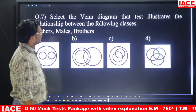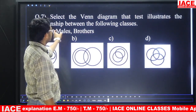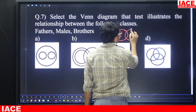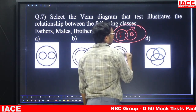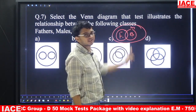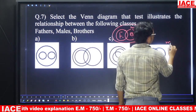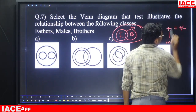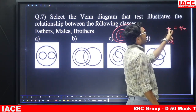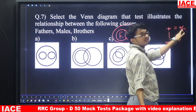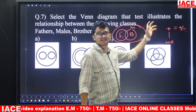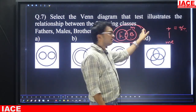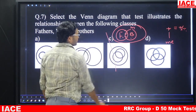Question number seven: select the Venn diagram that best represents the relation between fathers, males and brothers. Some fathers are brothers — for example, my father is a brother to his siblings. But all fathers are males, and all brothers are also males. So fathers and brothers are separate overlapping sets, both inside the males set. The answer is option C.